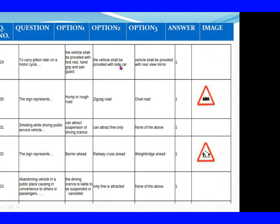Question 129: To carry a pillion rider on a motorcycle. Option 1: The vehicle shall be provided with footrest, handgrip and saree guard. Option 2: The vehicle shall be provided with sidecar. Option 3: Vehicle shall be provided with rear view mirror. The right answer is Option 1: The vehicle shall be provided with footrest, handgrip and saree guard. Question 130: The sign represents. Option 1: Hump or rough road. Option 2: Zigzag road. Option 3: Ghat road. The right answer is Option 1: Hump or rough road.